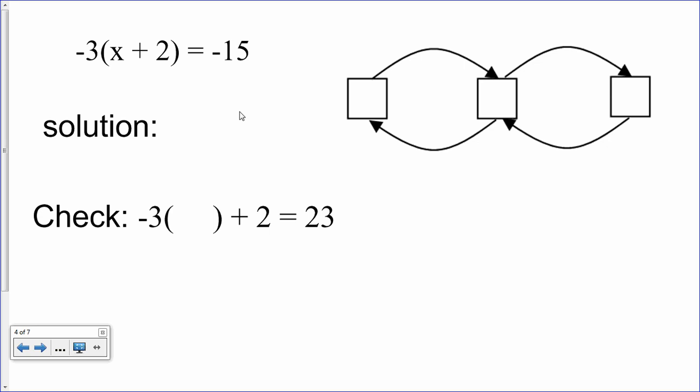Well, in this equation, it's kind of reversed. In this equation, the number thrown in the bucket that we're trying to figure out, whatever it is, 2 was added to it. And then that sum was multiplied by negative 3, and the result is negative 15.